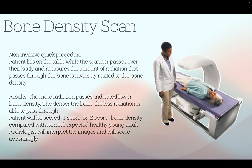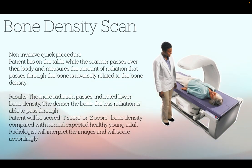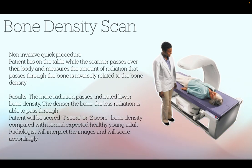This scan compares bone density with the bone density expected for a young healthy adult and a healthy adult of your own age, gender, and ethnicity. The difference between your measurement and that of a young healthy adult is known as a T-score, and the difference between your measurement and that of someone of the same age is known as the Z-score. These scores allow doctors to determine the depletion of bones and how they weaken per patient.